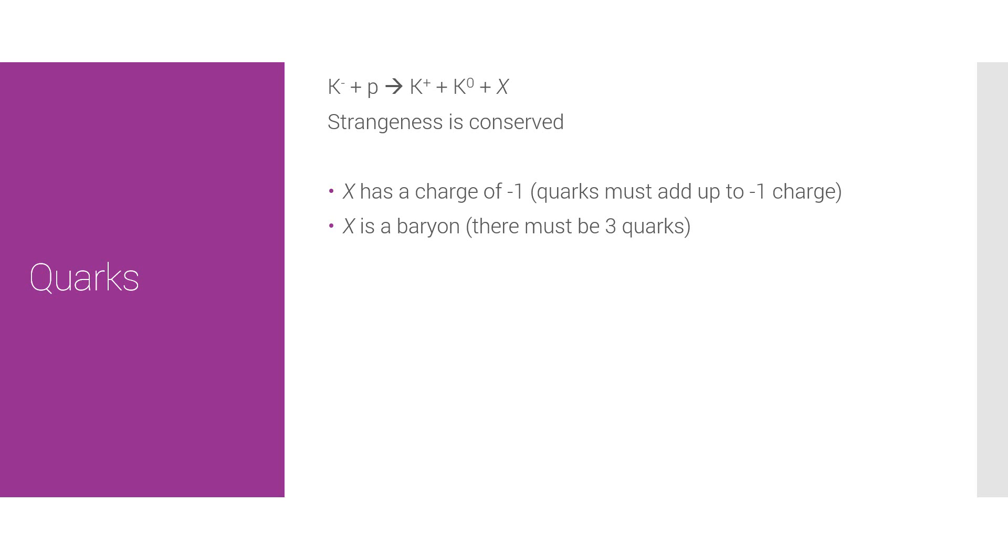So, on the right side, on the left side, we have strangeness of minus one. On the right side, we can either have strangeness of two or a strangeness of zero. So, X must have a strangeness of minus one or minus three to be able to conserve charge here.